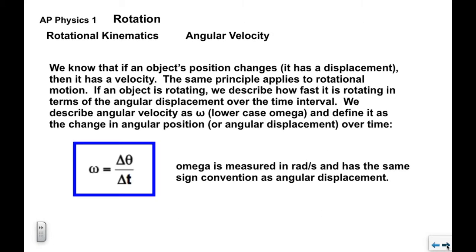If an object's position changes, it has a displacement, and therefore a velocity. The same principle applies to rotational motion. If an object is rotating, we describe how fast it's rotating in terms of angular displacement divided by time — this is the angular velocity. Angular velocity is defined as omega (ω), the lower-case curly w, defined as the change in angular position over time: ω = Δθ / Δt, measured in radians per second.